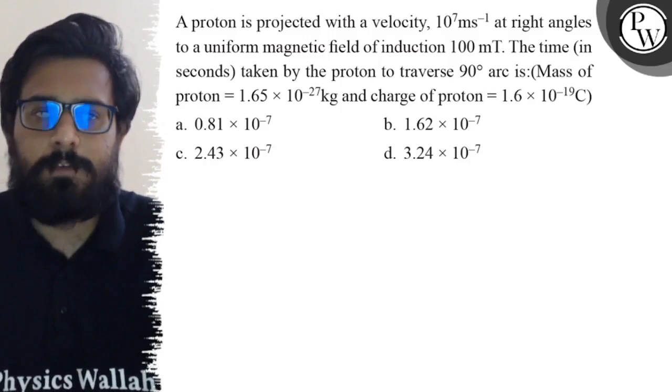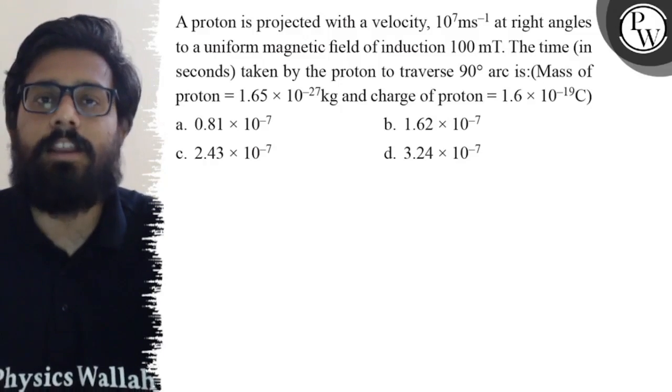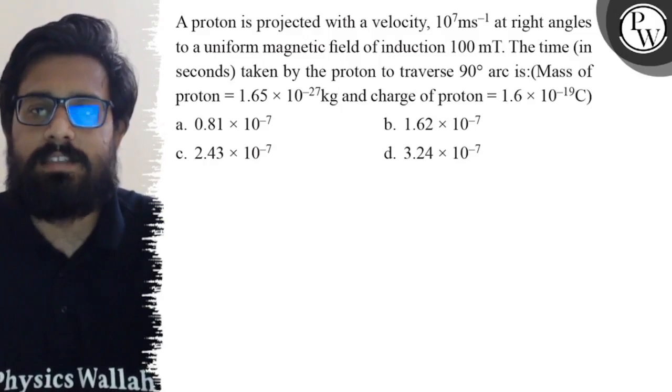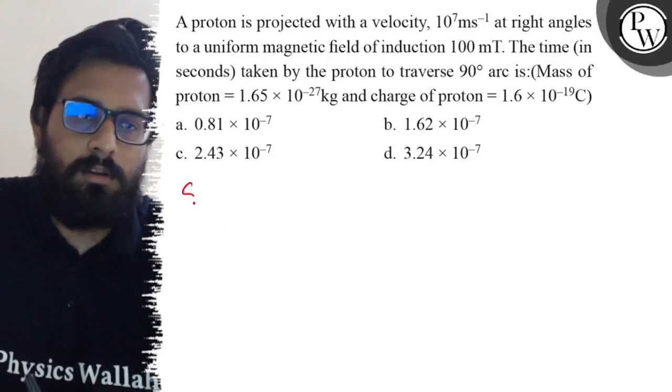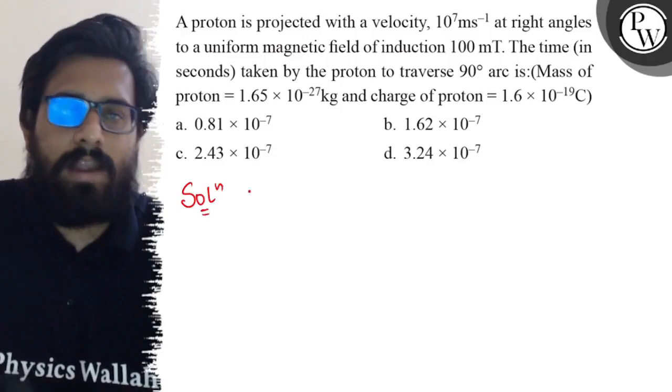Your first option is 0.81 × 10^-7, your second option is 1.62 × 10^-7, the third option is 2.43 × 10^-7, and your fourth option is 3.24 × 10^-7. So here in this question you have to find out the time